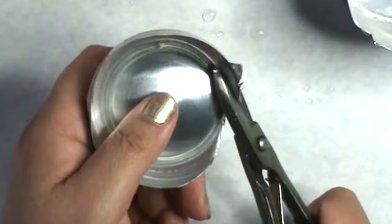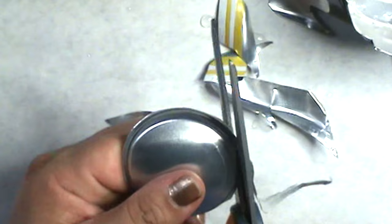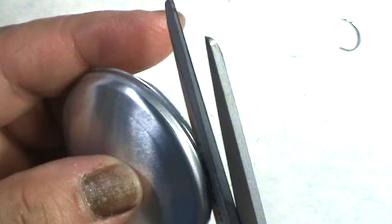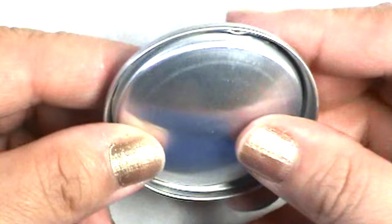Now with the bottom half of another can, we're gonna cut out the little dome piece on the inside of the can. Make sure it fits smoothly inside the top of the lid.